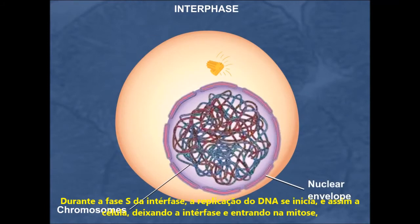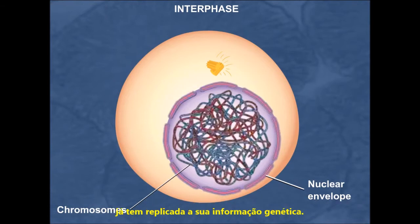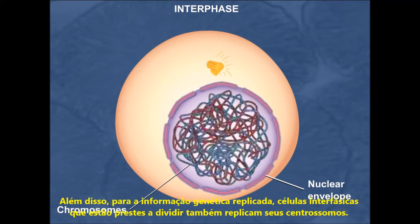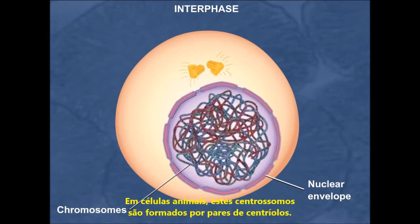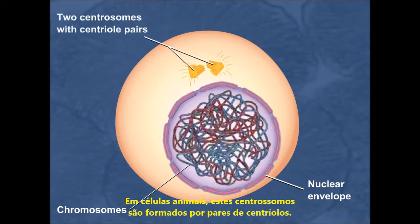During the S stage of interphase, DNA replication takes place, and thus the cell leaving interphase and entering mitosis has already replicated its genetic information. Interphase cells that are about to divide also replicate their centrosomes. In animal cells, these centrosomes are formed from centriole pairs.